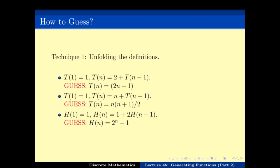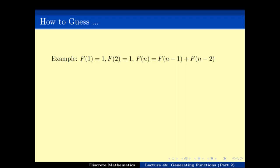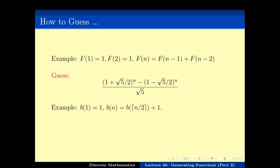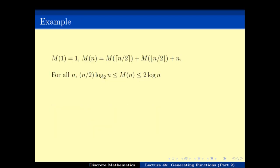There are some problems, for example the Fibonacci numbers, where guessing the solution is pretty complicated. One reason to believe it is complicated is that the actual formula for Fₙ turns out to be a scary expression, and hence one doesn't expect to guess such a formula by itself. In other cases the formula has something like a floor or ceiling, and in those cases there doesn't exist any nice guess. However, one can prove upper and lower bounds which might be good enough.